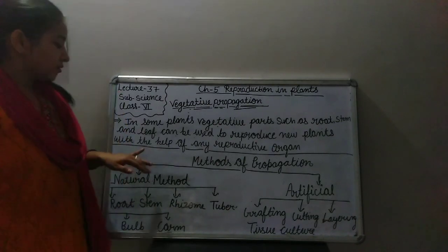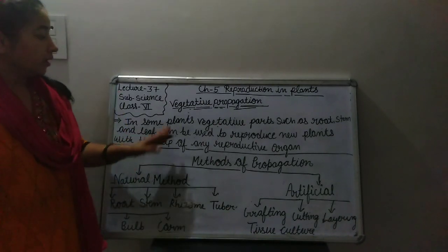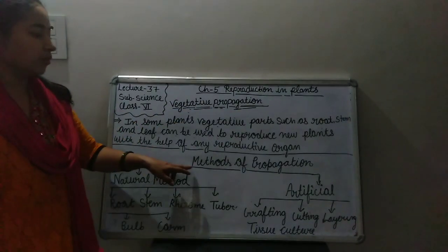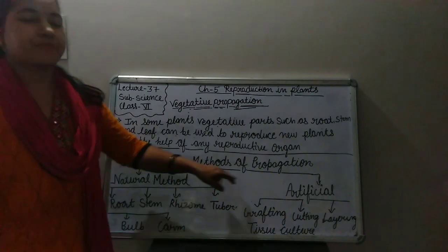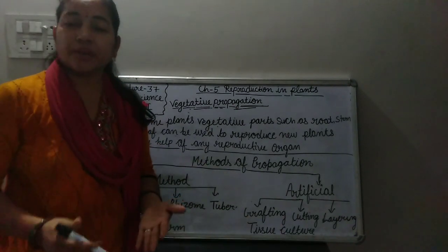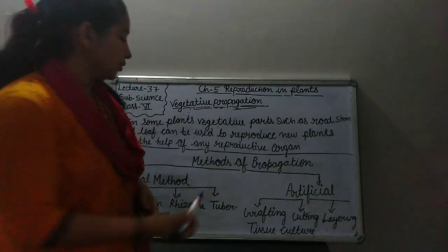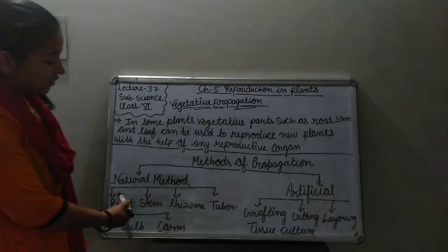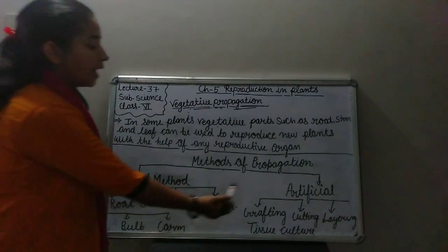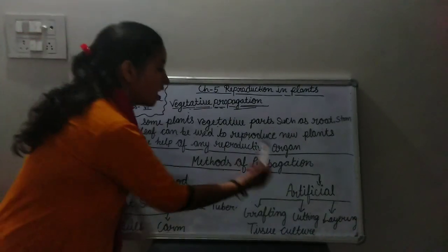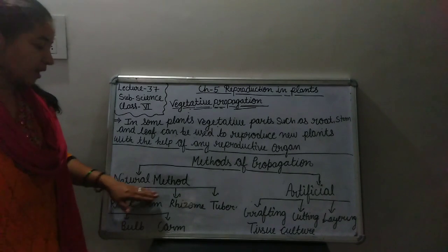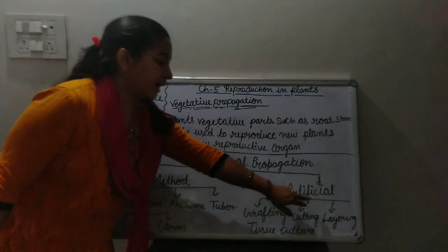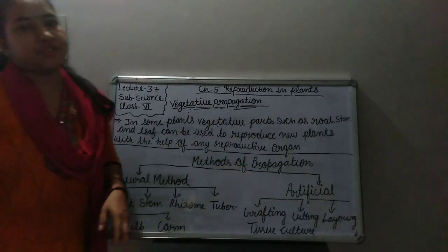In vegetative propagation we use two types of methods. The first method is natural methods and the second is artificial methods.